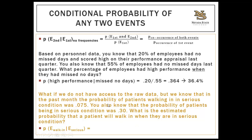For this example: the P(E-first and E-second) co-occurrence — patients who walk in and are in serious condition — is 0.075. The first event (being in serious condition) has a proportion of 0.30. Since we want the probability of walking in when in serious condition, divide 0.075 by 0.30 to get 0.25.